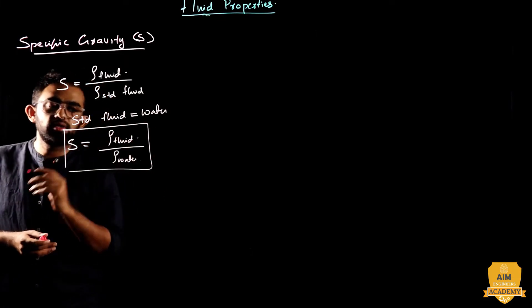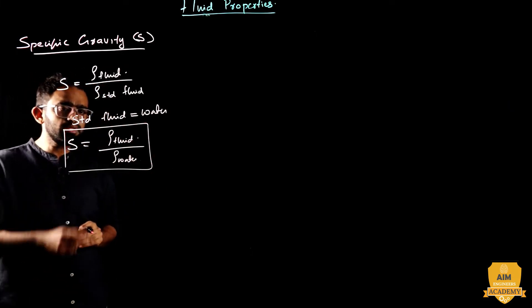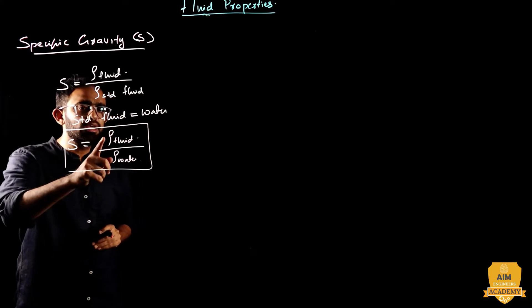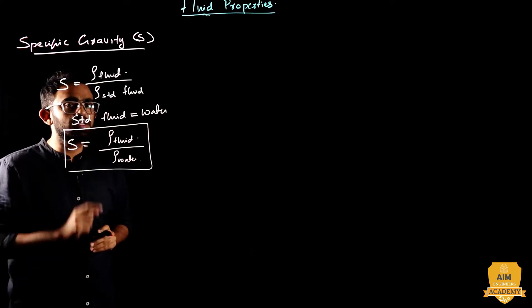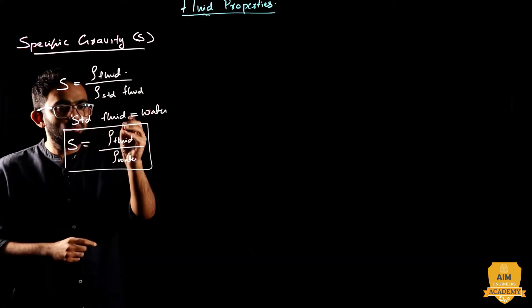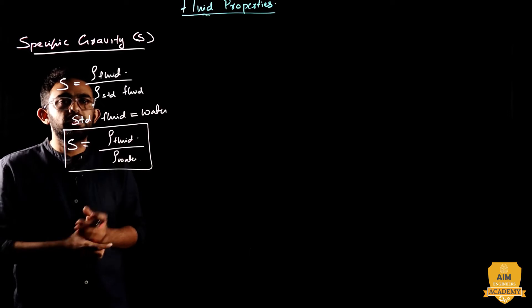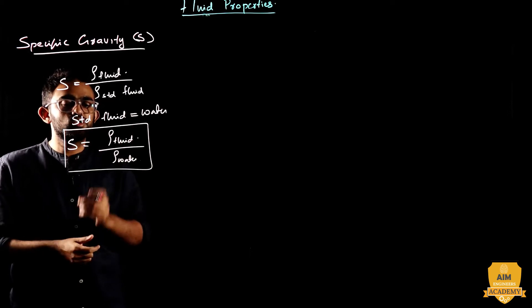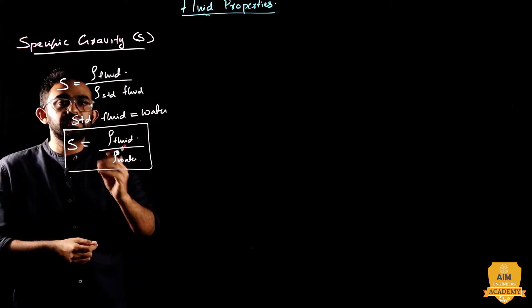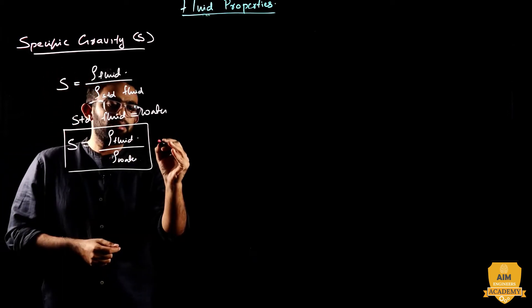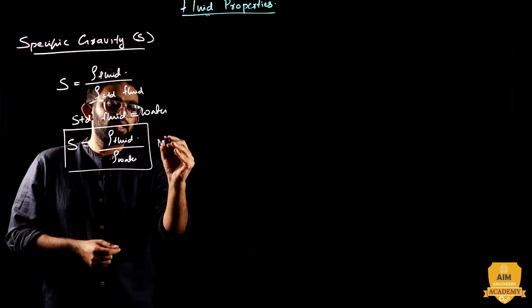Specific gravity is a dimensionless term. It is a dimensionless term, meaning its dimensions are M⁰L⁰T⁰.